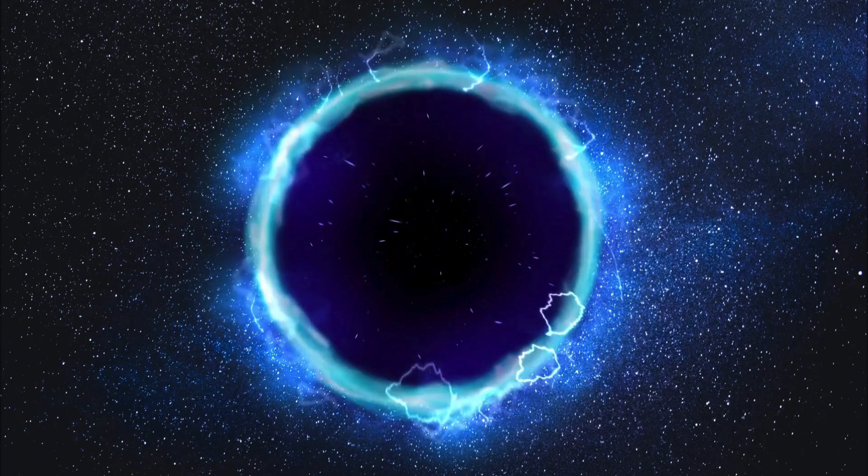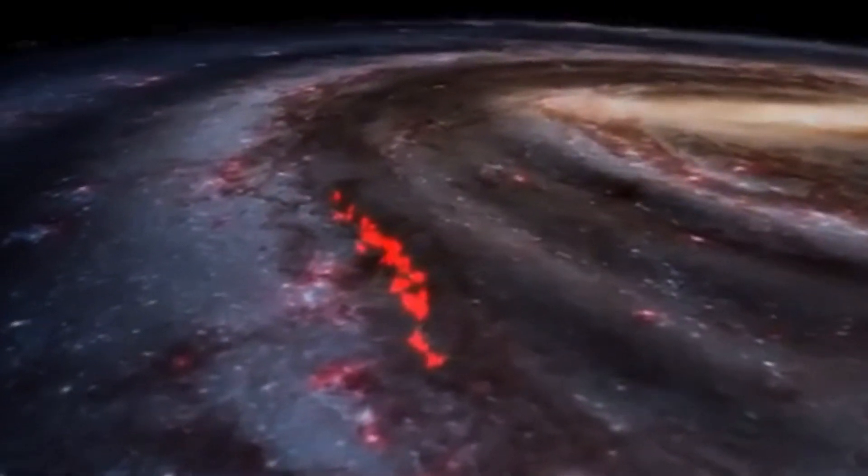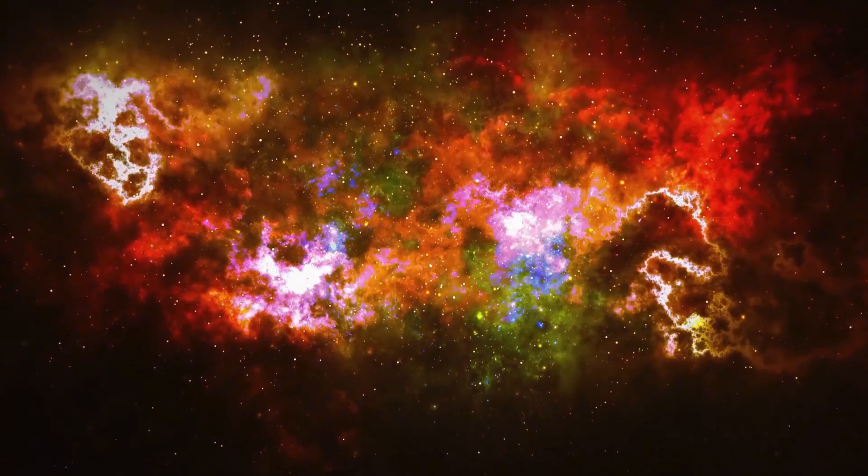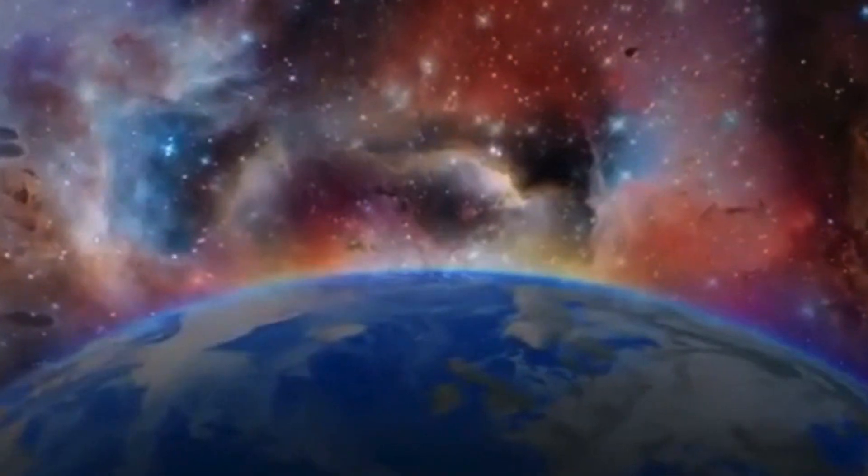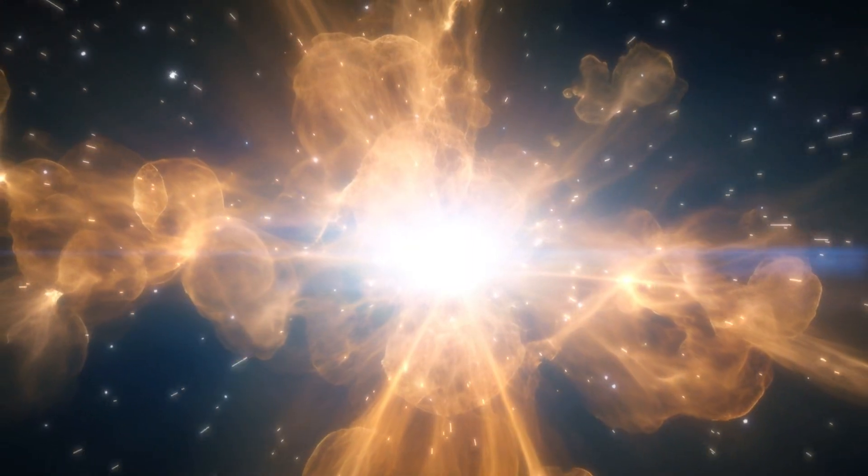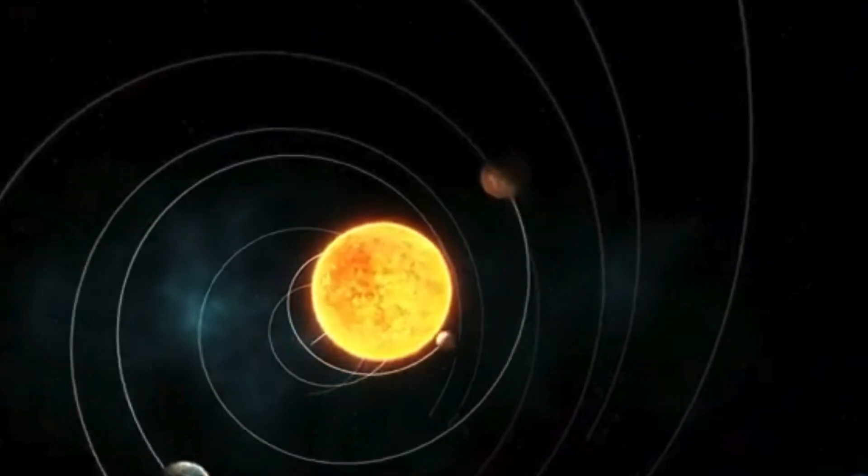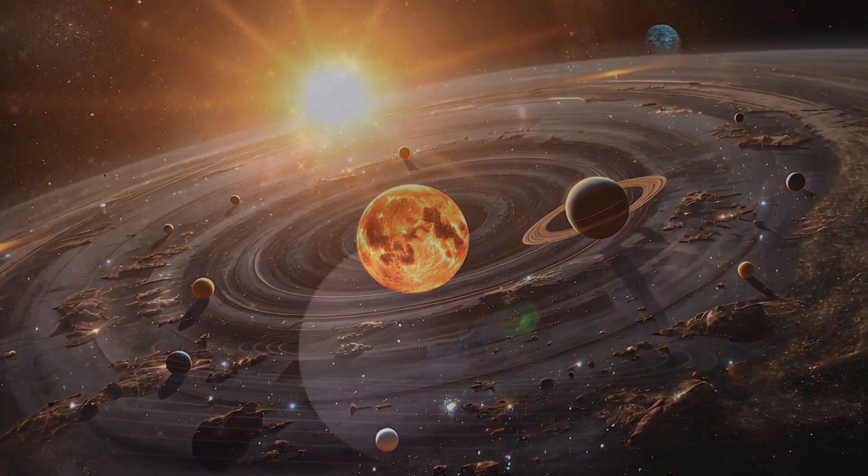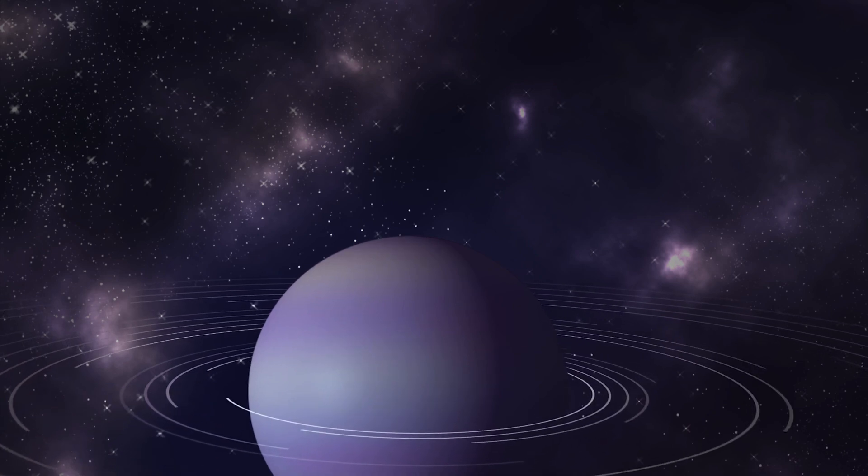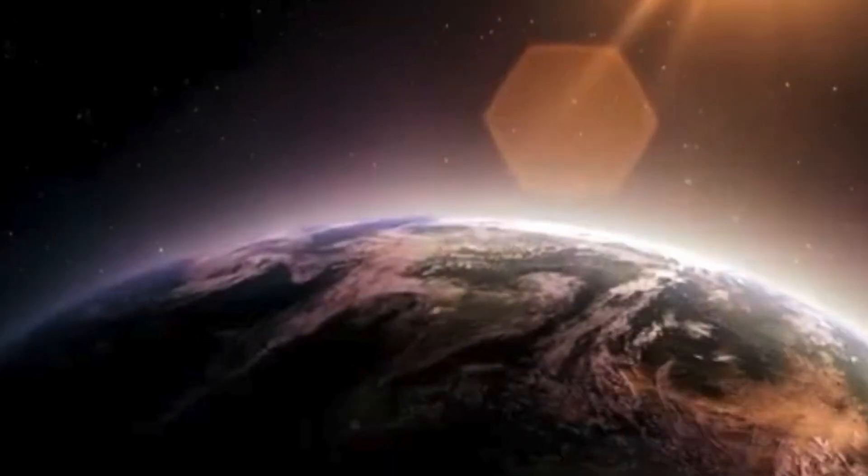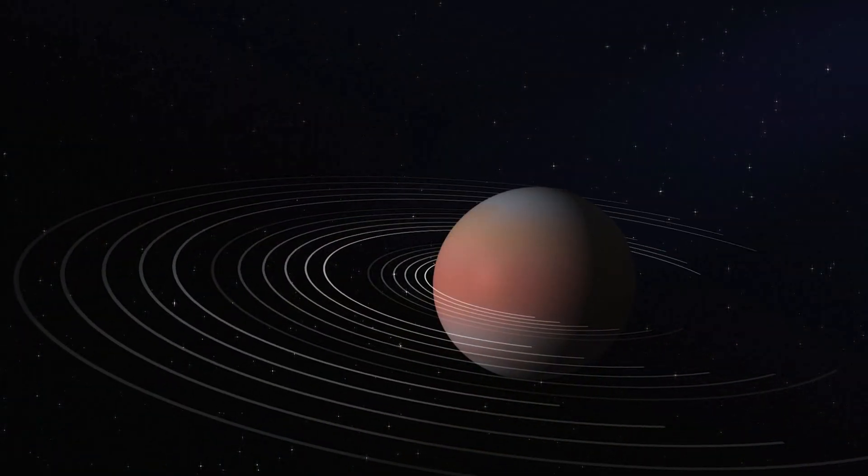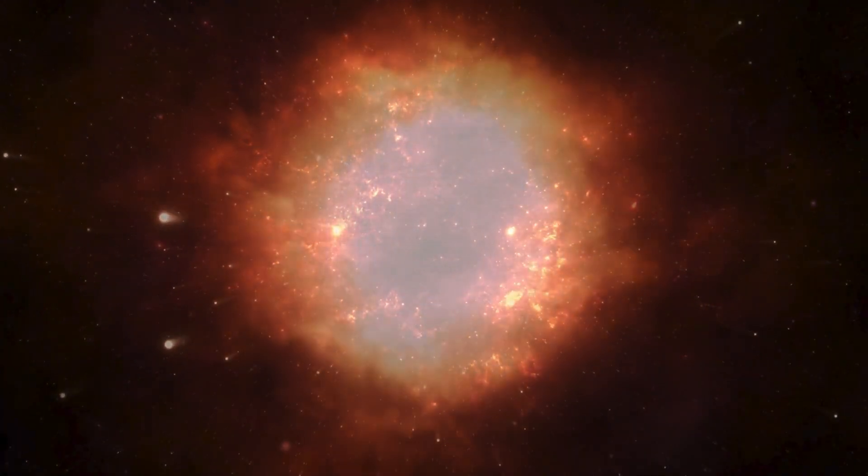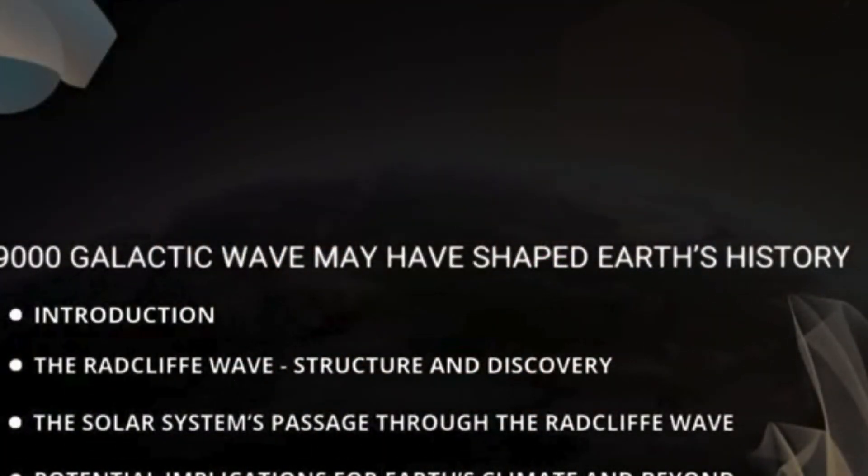The Solar System's Passage Through the Radcliffe Wave. Our solar system is constantly moving, orbiting the Milky Way's center approximately every 230 million years. Throughout this journey, it encounters different cosmic environments, from empty voids to dense molecular clouds. One of the most fascinating revelations from recent research is that between 14.8 and 12.4 million years ago, our solar system passed directly through a dense region of the Radcliffe Wave, specifically the Orion Star-Forming Complex. This finding was determined using Gaia data and spectroscopic observations. Scientists traced the movement of star clusters within the Radcliffe Wave and compared them with the reconstructed past trajectory of the solar system.